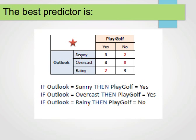Our rules are nice and easy. Our 1R rule: if Outlook is Sunny, then PlayGolf equals yes — because three yeses is greater than two nos. If Outlook is Overcast, then PlayGolf equals yes — we don't have any nos for Overcast. If Outlook is Rainy, then PlayGolf equals no, because the number of nos is larger than the number of yeses.